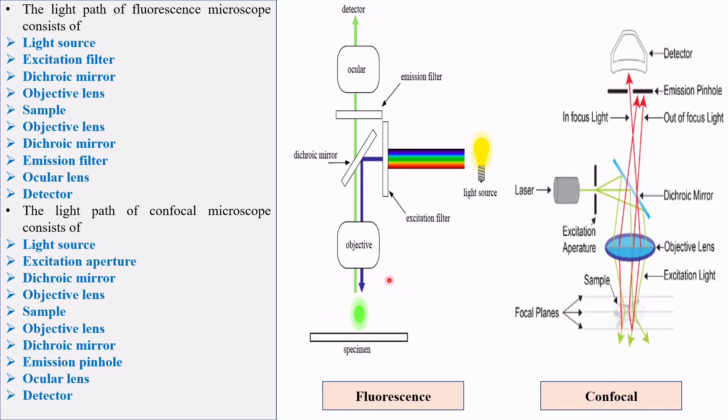Excitation light will hit the dichroic mirror in both cases, in both fluorescence microscope and confocal microscope. Dichroic mirror is a very specialized mirror. It allows light of a certain wavelength to pass through while light of other wavelengths is reflected. We can see blue or green light is reflected by the mirror and directly hits specimen through the objective lens.